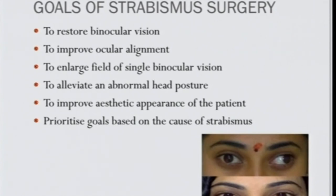The goals of strabismus surgery are: to restore binocular vision, to improve ocular alignment, to enlarge the field of single binocular vision especially in paralytic squints, to alleviate abnormal head posture, and to improve aesthetic appearance. In adults, aesthetic appearance can actually become the primary indication — as Santana Gopal humorously calls them, 'honeymoon squints,' where patients come before marriage to improve appearance. Goals should be prioritized based on the cause of strabismus.